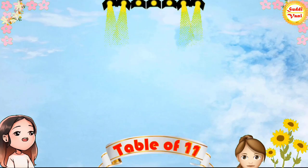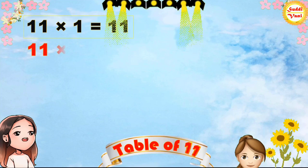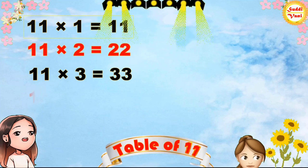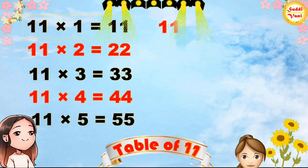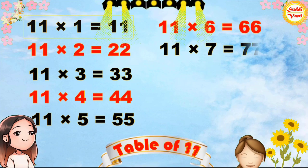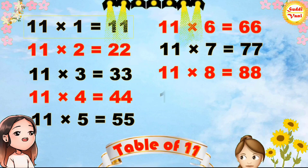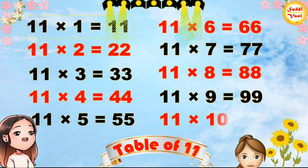Once again: 11 × 1 = 11, 11 × 2 = 22, 11 × 3 = 33, 11 × 4 = 44, 11 × 5 = 55, 11 × 6 = 66, 11 × 7 = 77, 11 × 8 = 88, 11 × 9 = 99, 11 × 10 = 110.